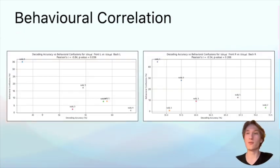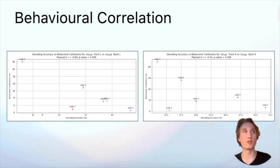And furthermore, these results seem to align with our behavioral data. So here, these two plots show the front back confusions for front left versus back left positions on the left plot, and front right versus back right positions on the right plot, with the decoding accuracy for each of these subjects on the x-axis, like we saw in the previous plot. And we can see that there's a negative correlation between behavioral confusions and decoding accuracy.